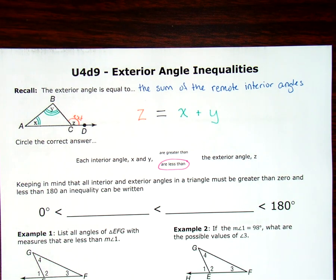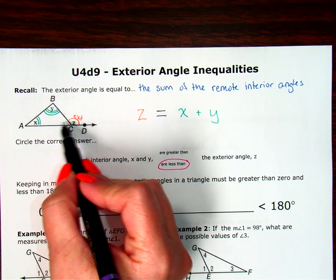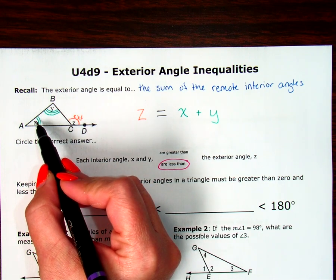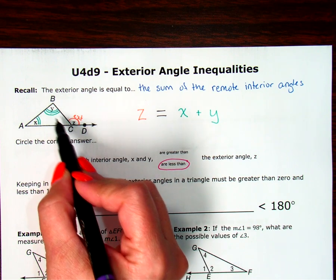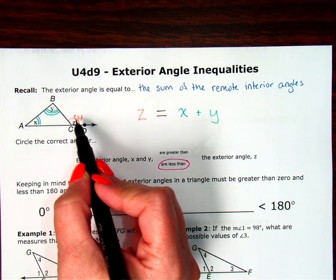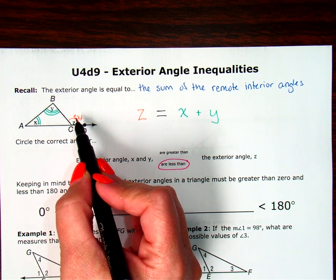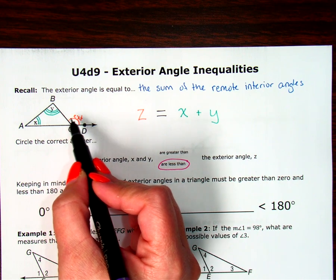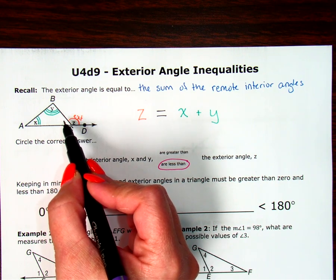We also have to remember that interior and exterior angles in a triangle have to be greater than zero, because an angle that equals zero is just a ray. And they can't be equal to or bigger than 180, because the three angles inside my triangle together have to make 180. So one angle of itself can't equal 180 because you still have to have some degrees left for the other two angles. Same thing with my exterior angle — it can't equal 180 because it's a linear pair with the interior angle that's adjacent, and so some of that 180 has to go there.